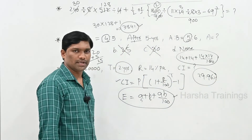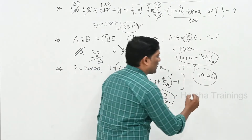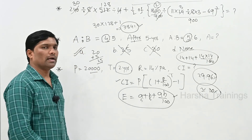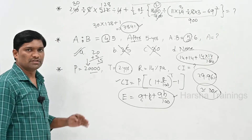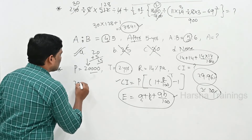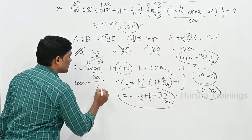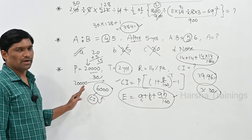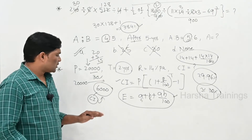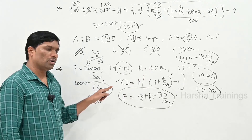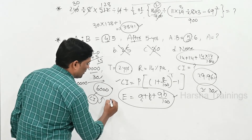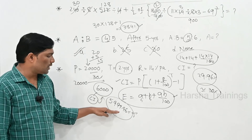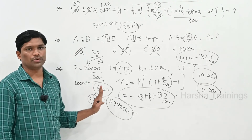29.96% is approximately 30%. Compound interest is calculated on the principal: 30% of 20,000 equals 6,000 rupees. So the compound interest is approximately 6,000 rupees. The exact value is 5,999.96, which rounds to 6,000. If the exact answer is not in the options, choose the closest — approximately 6,000.